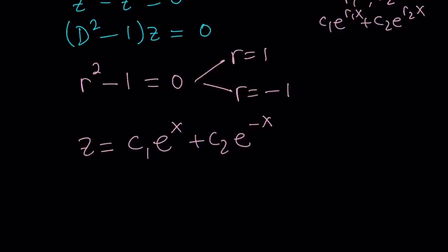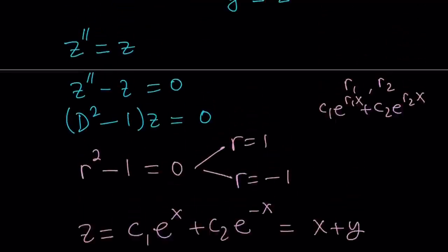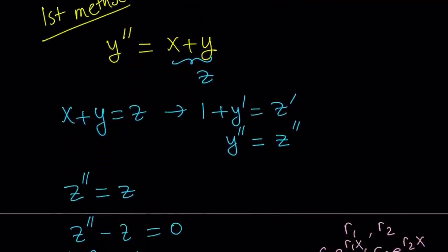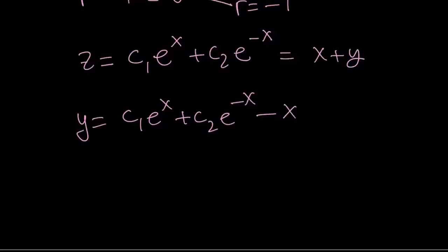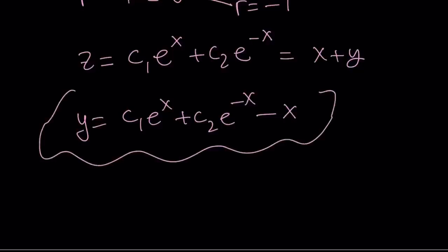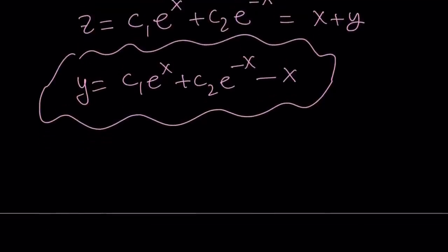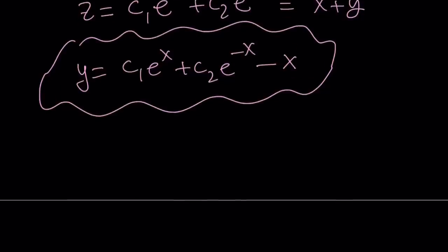That's the solution for z, but I need to turn it into a solution for y. We know that z equals x plus y — that's what we assumed at the beginning. So we can isolate y, and y is going to be c1 e to the power x plus c2 e to the power negative x minus x. That's the solution to our equation. Of course, you can differentiate this expression and test the solution — it's good practice in case you made a mistake.